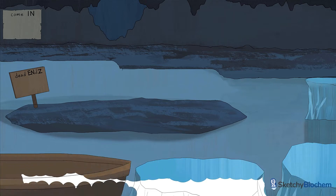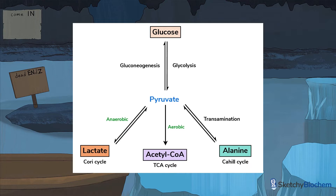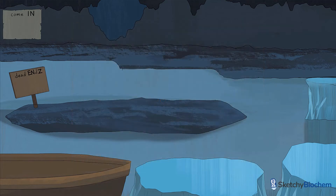Why do we need to know about glycolysis? Well, the end product of glycolysis is pyruvate, a three-carbon molecule that feeds into a number of important pathways depending on energy needs and whether oxygen is present. The whole point of glycolysis is to break down one glucose into two pyruvate, two ATP, and two NADH.